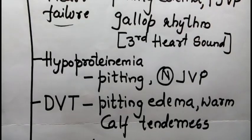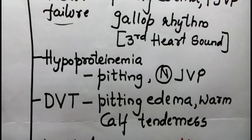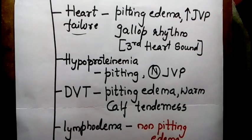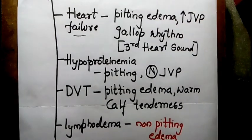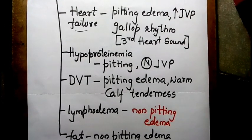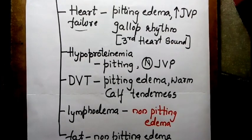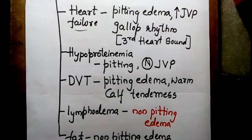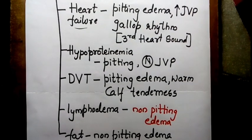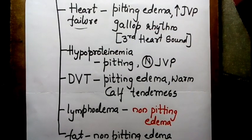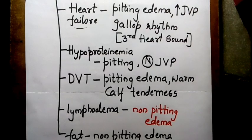To summarize: heart failure, hypoproteinemia, DVT, lymphedema, and fat accumulation can all be differentiated on the basis of clinical features. Now, going to a special condition — pregnancy.